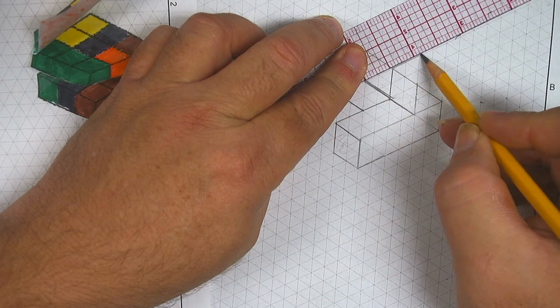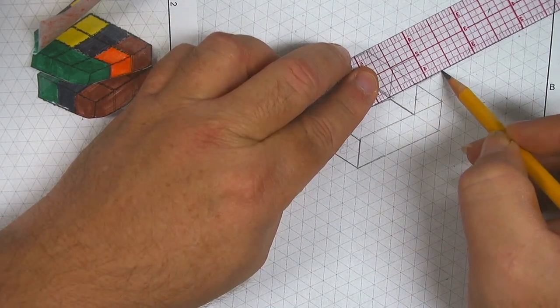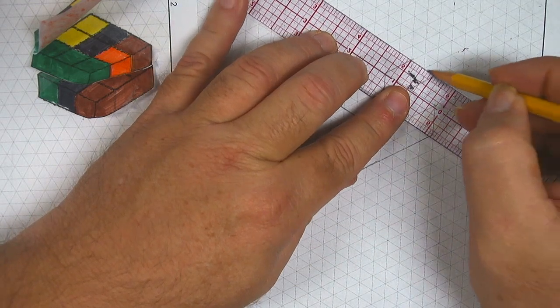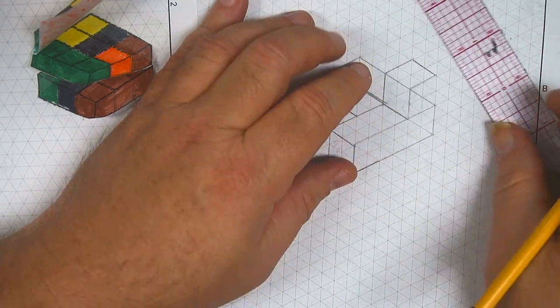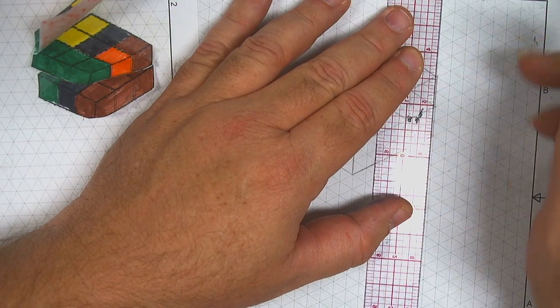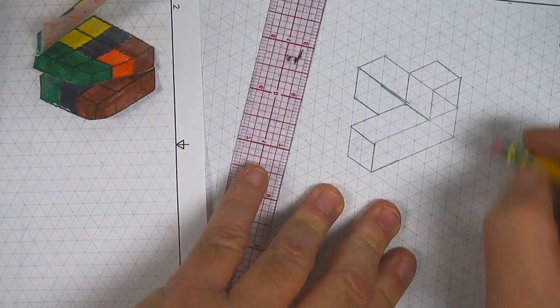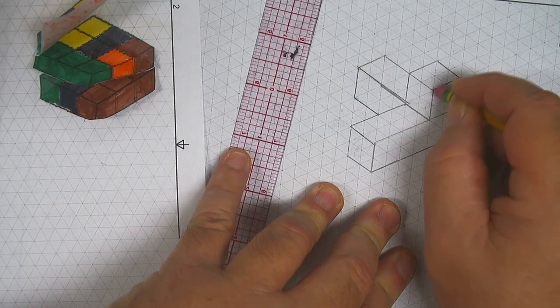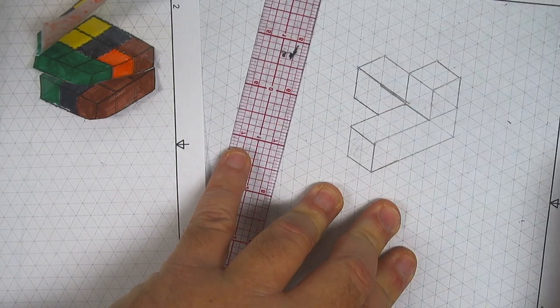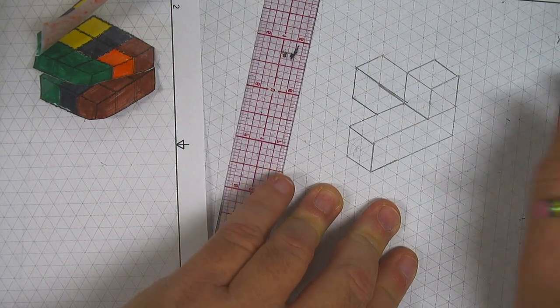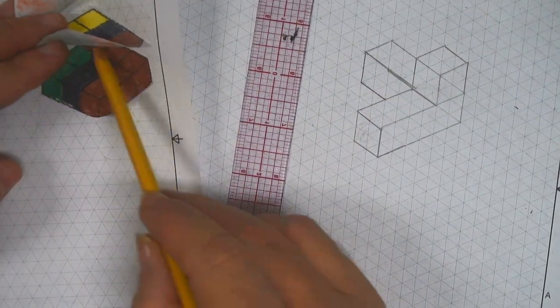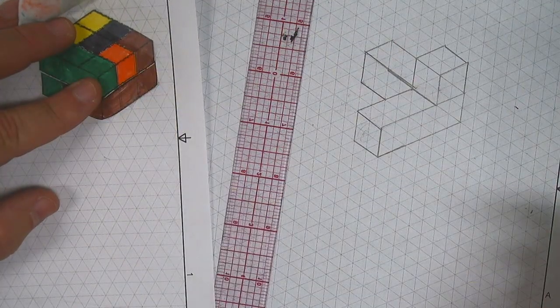Then I'm going to draw it backwards two cubes to get the width, and then the depth, two cubes, two units. And then that far right side edge, and I'm going to erase this line because it will not be seen in the actual part. So there's my isometric view of my brown piece right here with that cube on top.